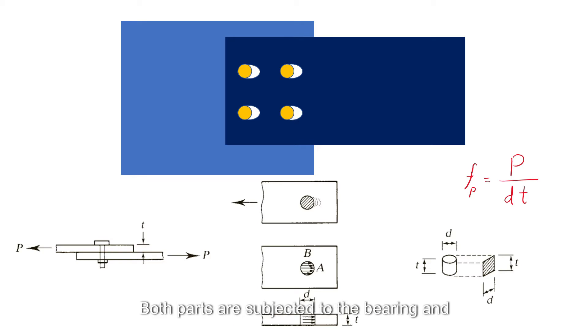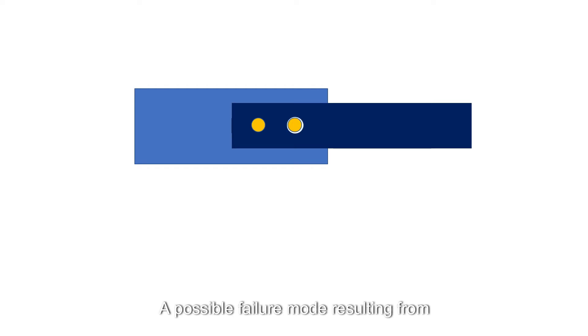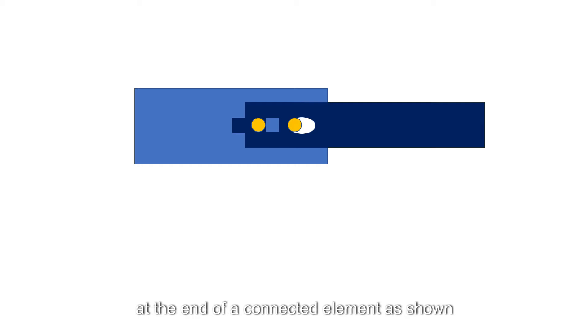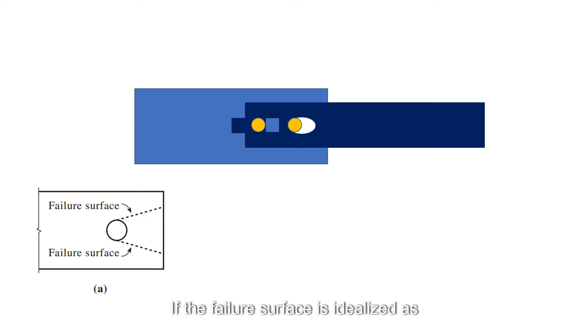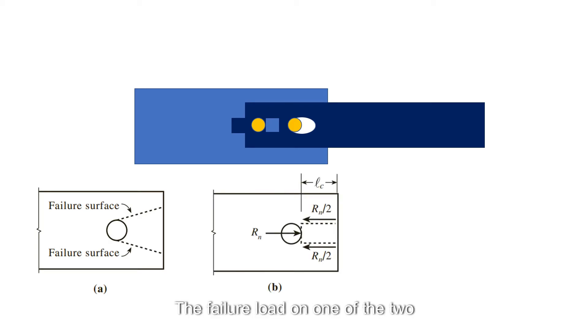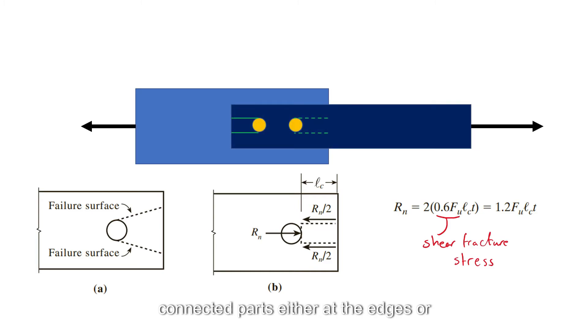Of course, here both parts are subjected to the bearing, and thus, the part with the lower strength governs. A possible failure mode resulting from excessive bearing is shear tear-out at the end of a connected element, as shown in figure A. If the failure surface is idealized as shown in figure B, the failure load on one of the two surfaces is equal to the shear fracture stress times the shear area.